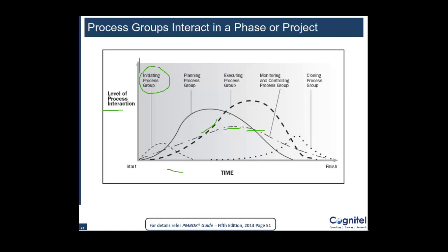Then execution finishes, and that's when you can see the closing process group. Closing was not there up till this point, but once you are doing execution you might have produced certain outputs or deliverables of your project that can be delivered alone — they don't need to be delivered only at the end of the project. That's why closing has started interacting, because certain outputs might be delivered to the customer as and when they have been produced. The major closing, of course, comes towards the end of the project, and then the project finishes.